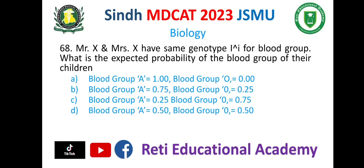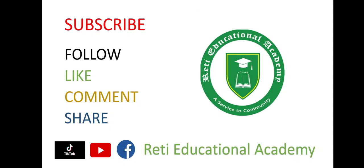Question number 68. Mr. X and Mr. SX have the same genotype for blood groups. What is the expected probability of the blood group of their children? And the correct option is B. Subscribe to the Educational Academy YouTube channel for more short past papers and preparation. Thank you.